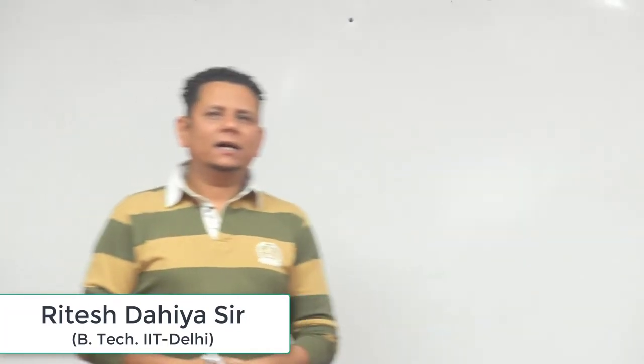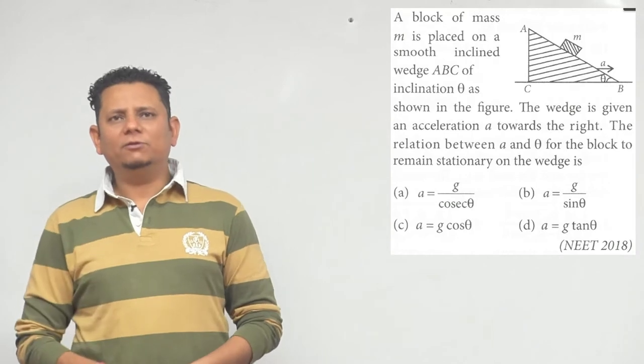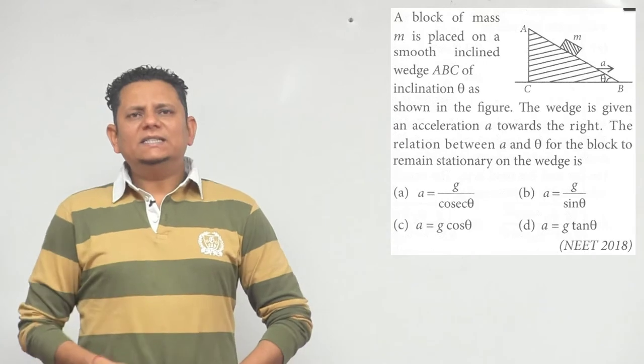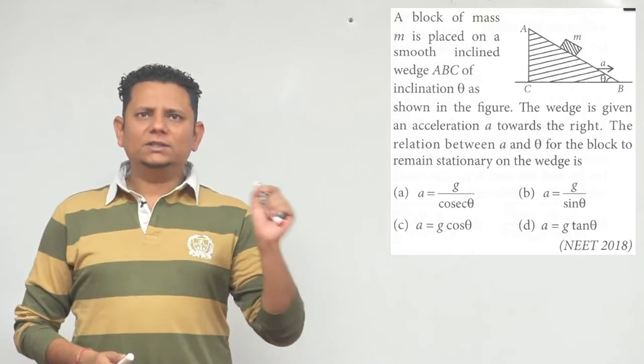Next question. It says a block of mass M is placed on a smooth inclined wedge ABC of inclination theta as shown in the figure. The wedge is given an acceleration A towards the right.